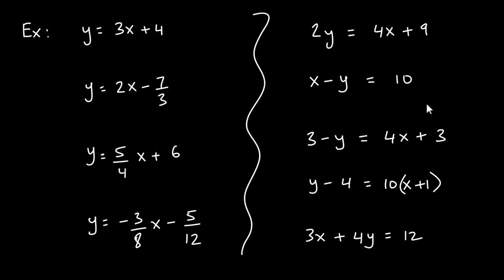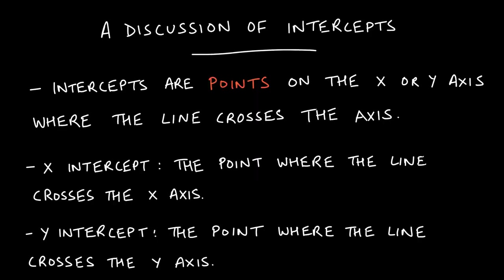A cautionary note: students often see a question like this on a midterm and incorrectly look at the coefficient of x and say the slope is 4. That is incorrect. The slope can only be determined if the line is in y = mx + b form with y isolated. If y is not by itself, you cannot simply read off the slope, and the y-intercept will not be whatever constant you see either. Please keep that in mind.